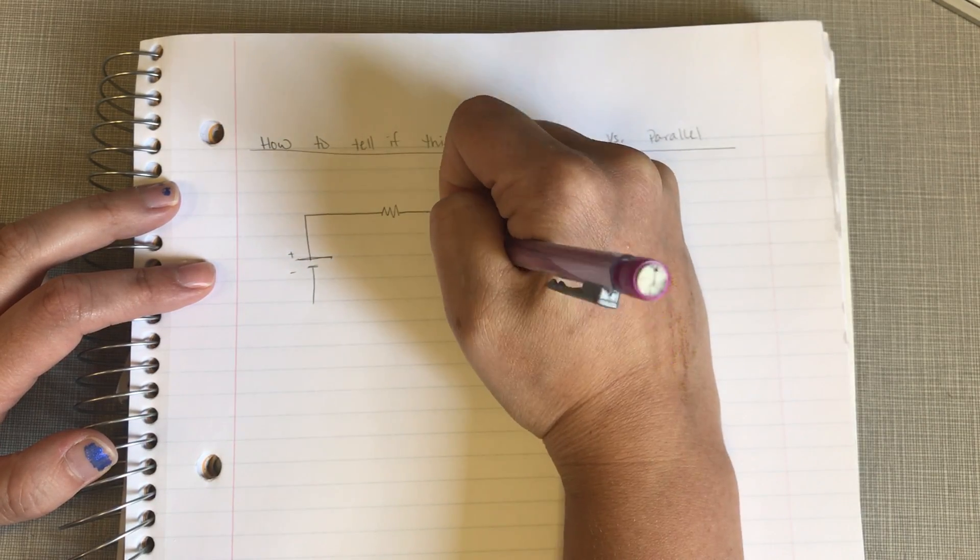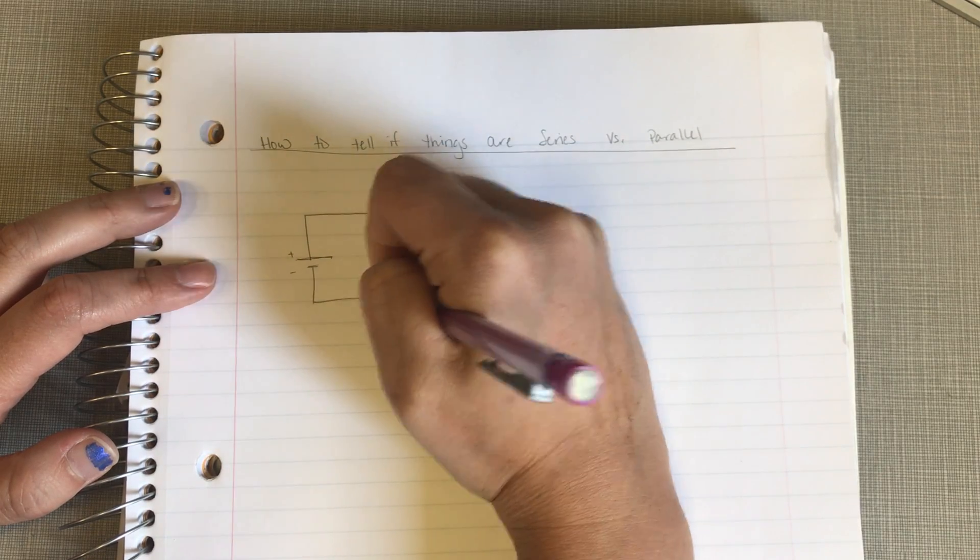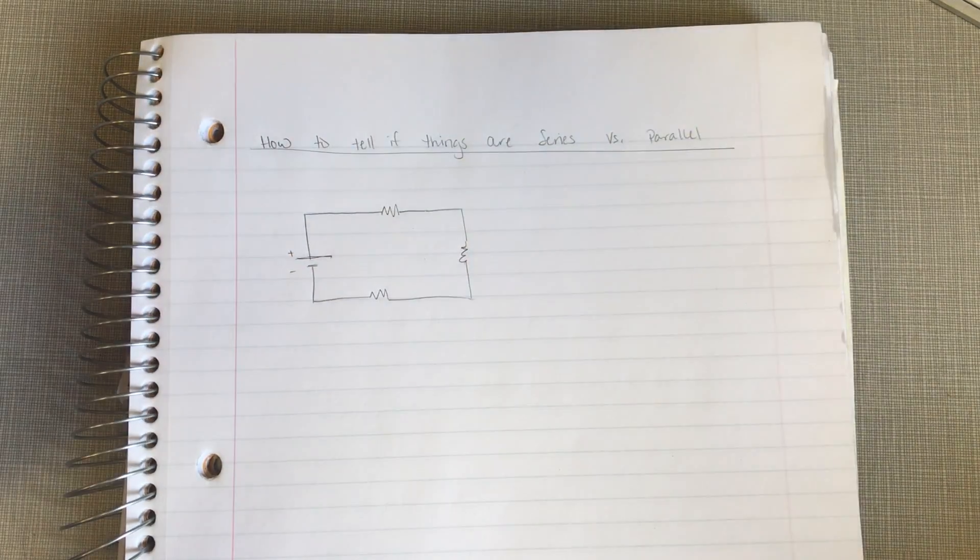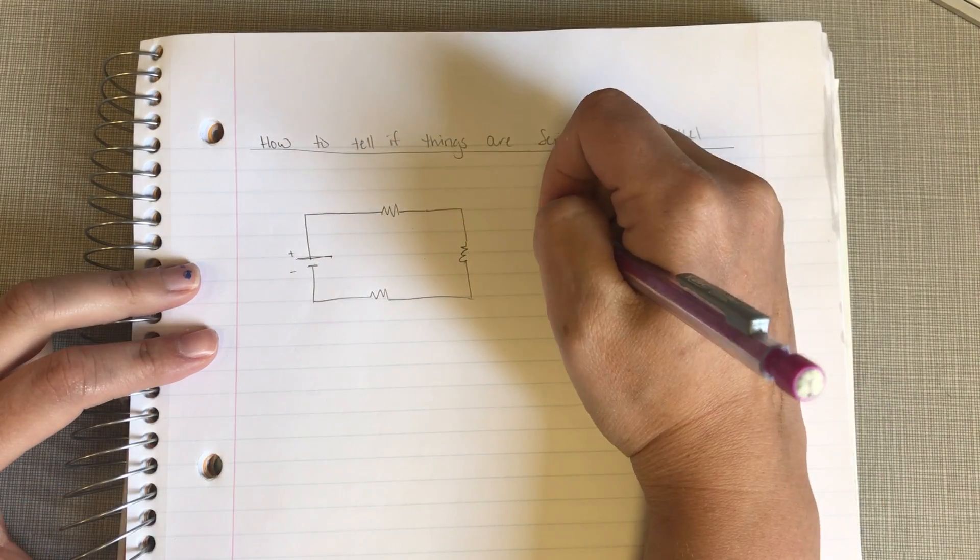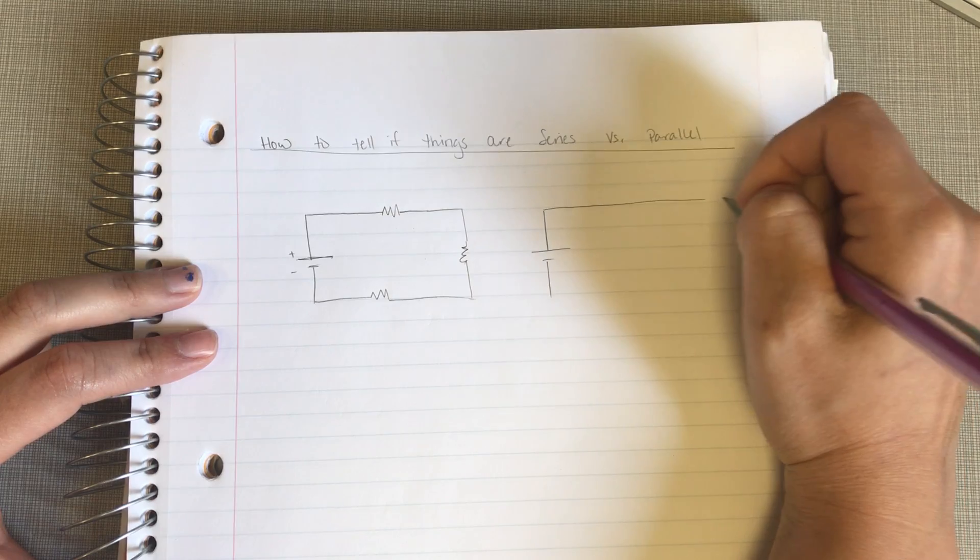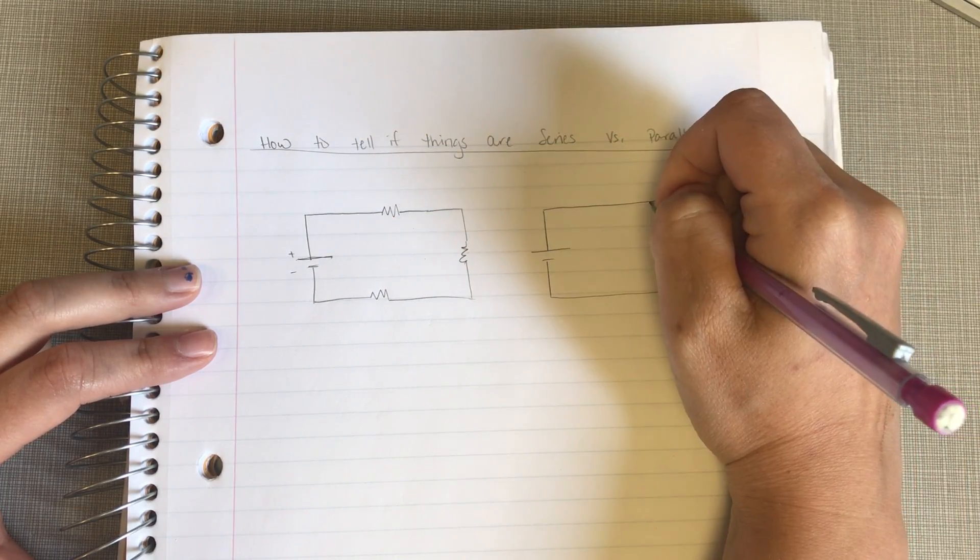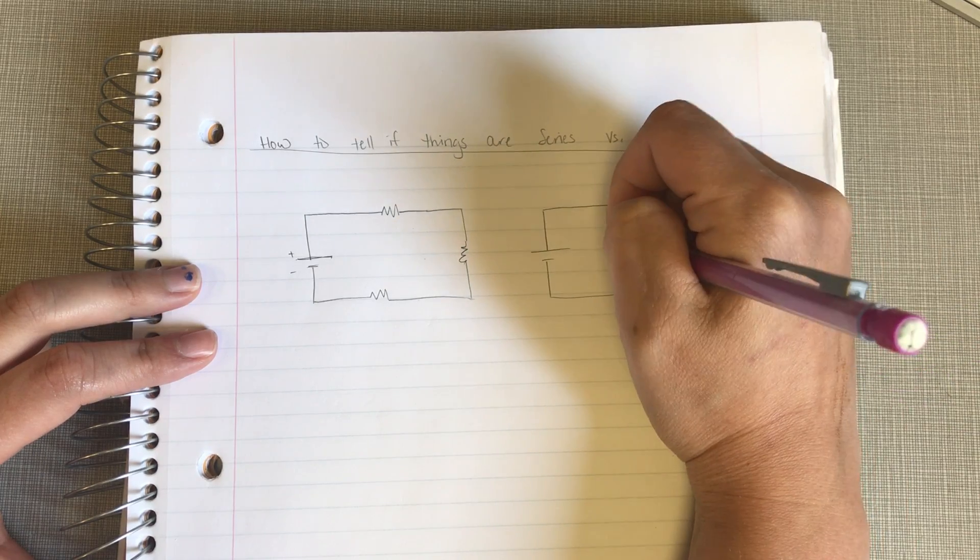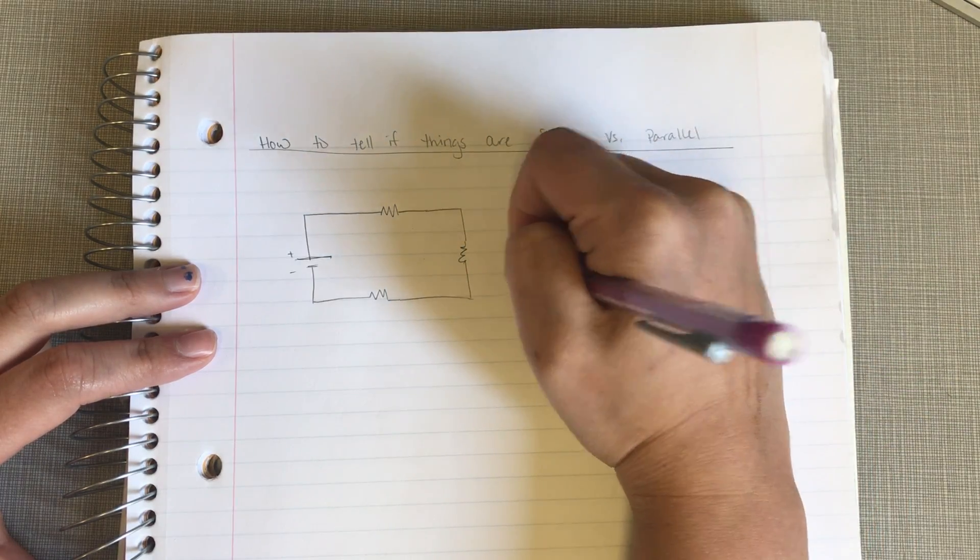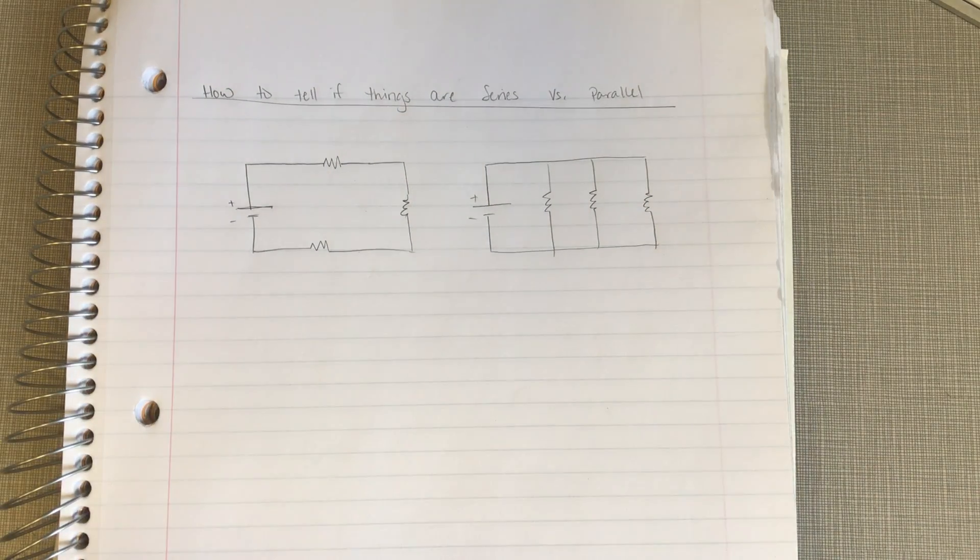So, how to tell if things are in series or parallel is going to be the same whether you have resistors or capacitors. Okay, so there's one circuit and then let's look at another one that looks like this. Okay, so here we have two circuits. We have a series circuit and we have a parallel circuit.